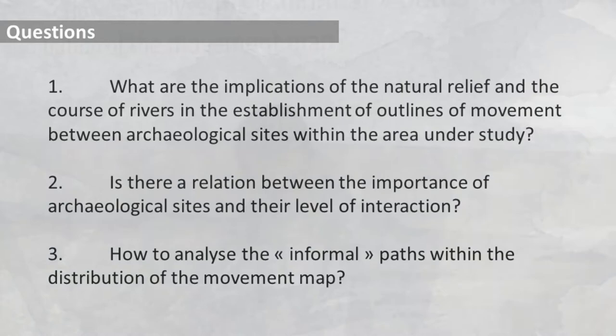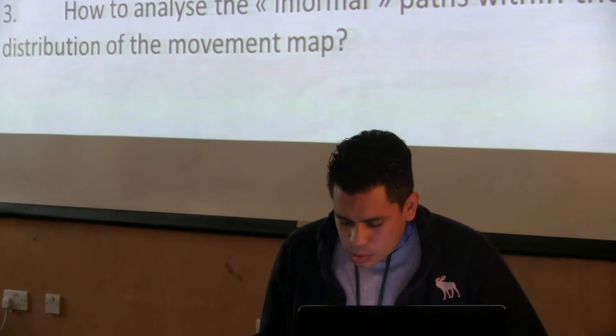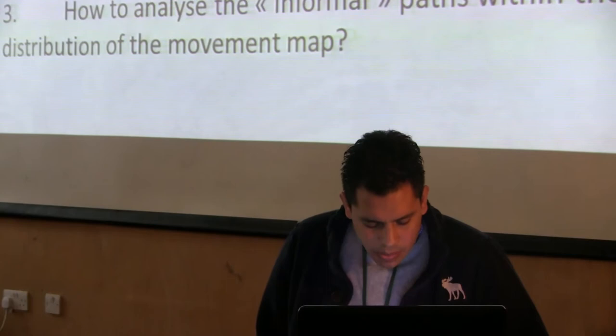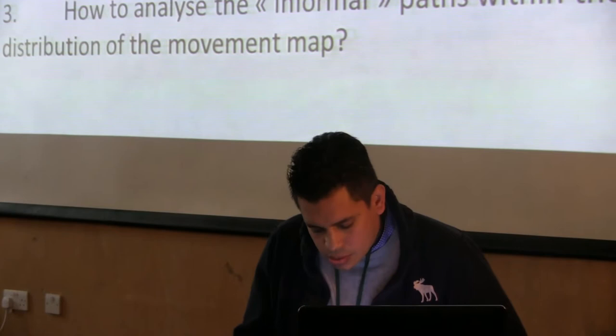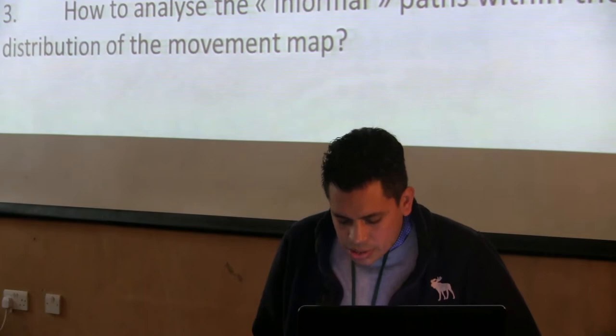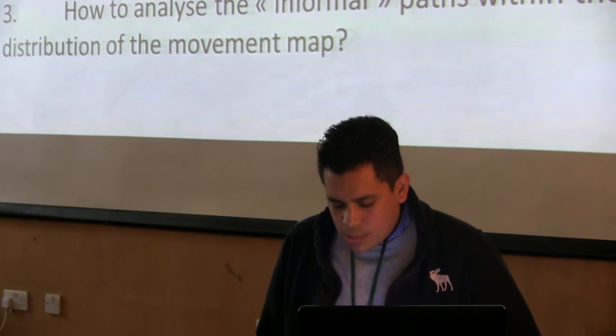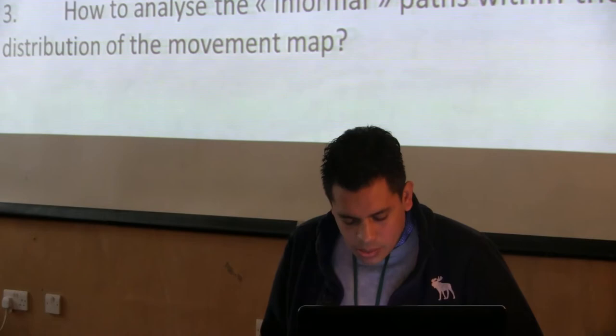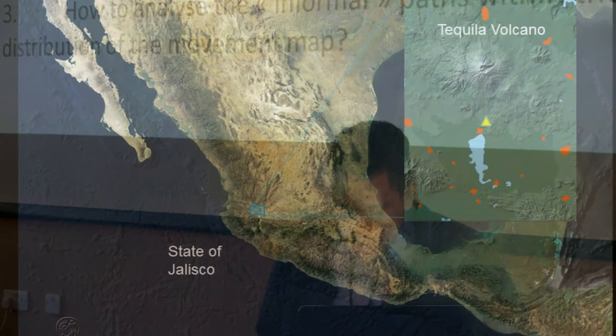And how do we analyze the informal paths within the distribution of the movement map? To respond to these questions, we have created a Least Cost Path network that we have analyzed by using GIS, and we have used these tools to model the cost surface and friction surface in digital terms. The analysis of the Least Cost Path has become important in archaeology. The idea behind this analysis is that the movement from one point to another generates a cost, and the objective is to choose a path of minimum cost, at least in terms of energy or time.